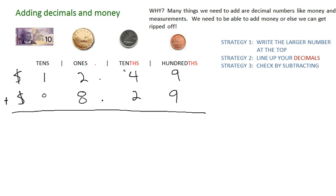So let's add them up. Nine pennies plus nine pennies is eighteen pennies, which is like one dime and eight pennies. One plus four is six, plus five, plus two is seven — so seven dimes. I'm going to put the decimal spot right below the other two, keeping them all in line. Two plus eight is ten, and one ten plus one ten is twenty. So we have twenty dollars and seventy-eight cents.